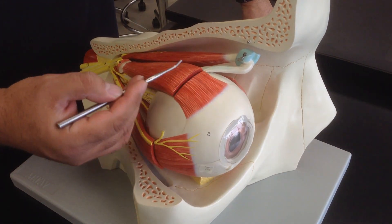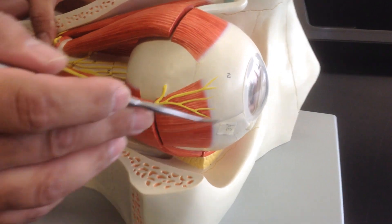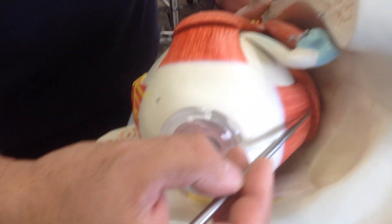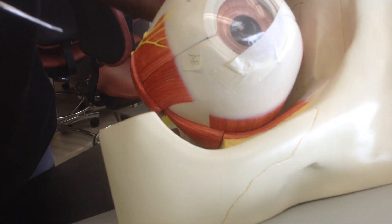This is the superior rectus. This becomes the lateral rectus muscle here. This one becomes the medial rectus. And also, there is one that sits right in this area here. This is known as the inferior rectus.